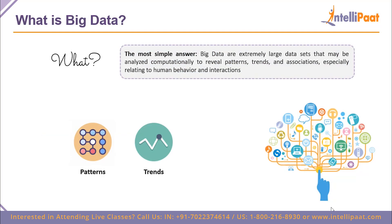When we talk about big data, as the name suggests it basically means huge amounts of data. These huge amounts of data are worked on, analyzed, and processed, and what we get at the end are patterns, trends, associations, and insights especially related to human behavior and interactions. Patterns and trends form part of data analytics, which works under the umbrella of data science.